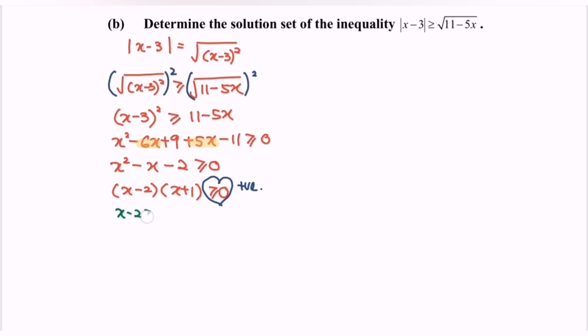So x minus 2 greater than or equal to 0, x plus 1 greater than or equal to 0. So finally x greater than or equal to 2, x greater than or equal to negative 1.